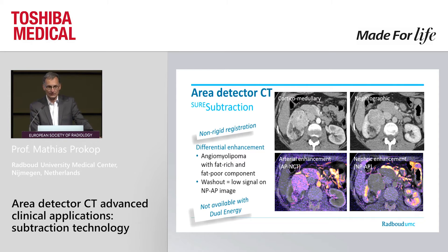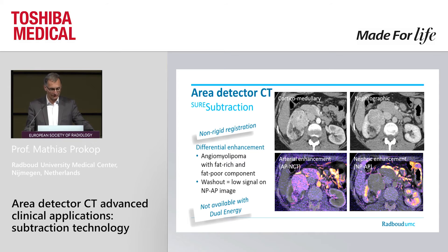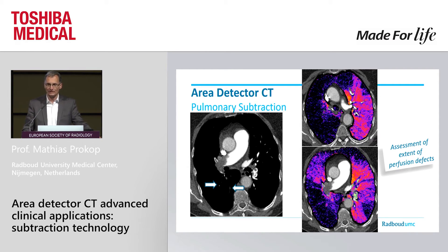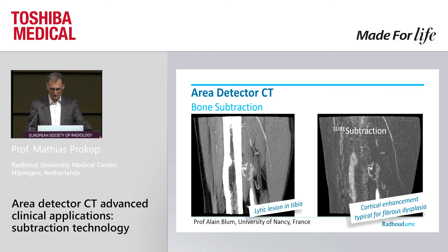We can also do things not possible with dual energy: not only looking at classic enhancement like arterial phase minus non-contrast phase, but also differential enhancement — which part of a tumor or organ is mainly perfused during a later phase. In this situation, you can see it's mainly the renal medulla which is more enhancing in the nephrographic phase. Pulmonary subtraction is a very frequent application — the main thing is finding obscure small clots visible thanks to distal perfusion defects, and assessing the extent of perfusion defects, which can be quite different from clot burden. We must keep in mind that we also see perfusion defects in bronchial occlusions or strictures due to reflex vasoconstriction.